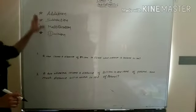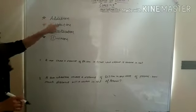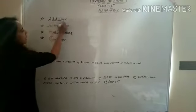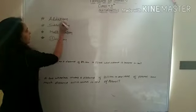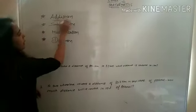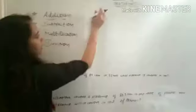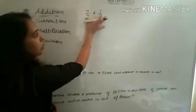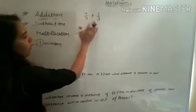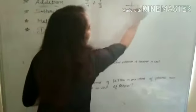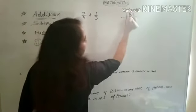First, the main problem - addition of fractions is very easy. First you need to know what fractions are. If we take the fractions 7 by 4 plus 1 by 3, these are two fractions. How to add them? The first step is that we will take the LCM of these numbers.